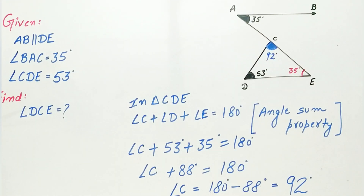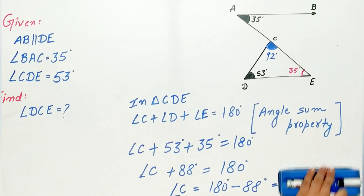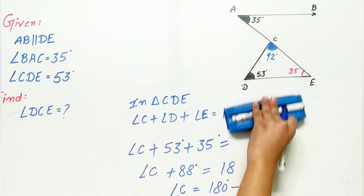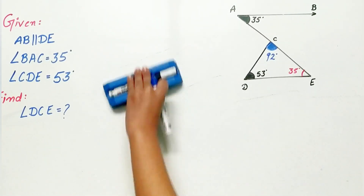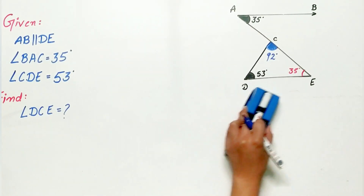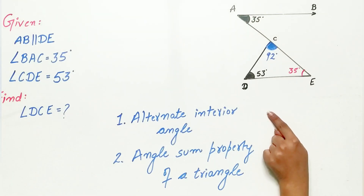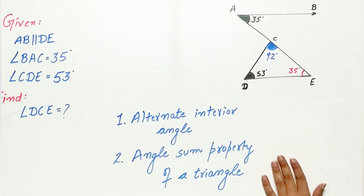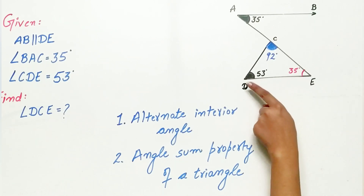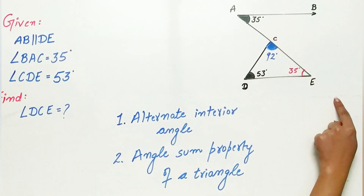This brings us to an end of this question. If you have any doubt, let me know in the comment section. A quick recap: we used the alternate interior angles property and the angle sum property of a triangle to find angle DCE.